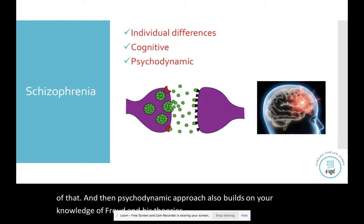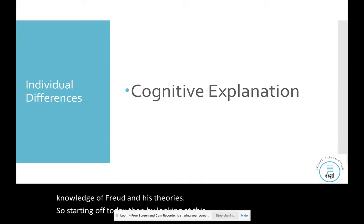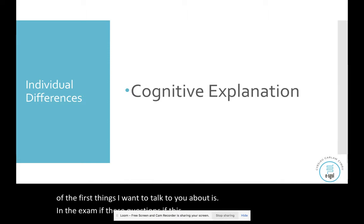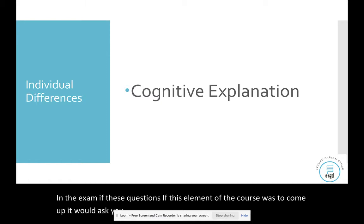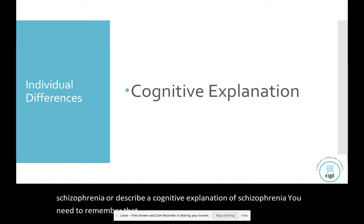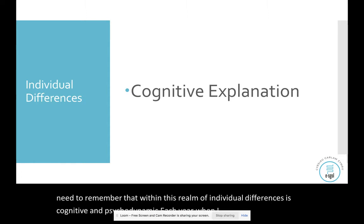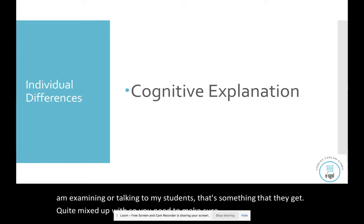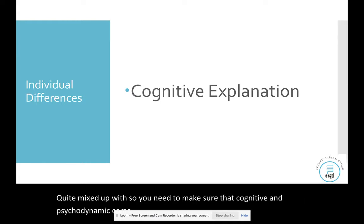Starting off today by looking at the cognitive explanation. One important thing to note for the exam: if this element of the course comes up, it would ask you to describe an individual differences explanation of schizophrenia, or describe a cognitive explanation. You need to remember that within the realm of individual differences is cognitive and psychodynamic. Make sure you know they come underneath that title of individual differences so you don't get confused in the exam.